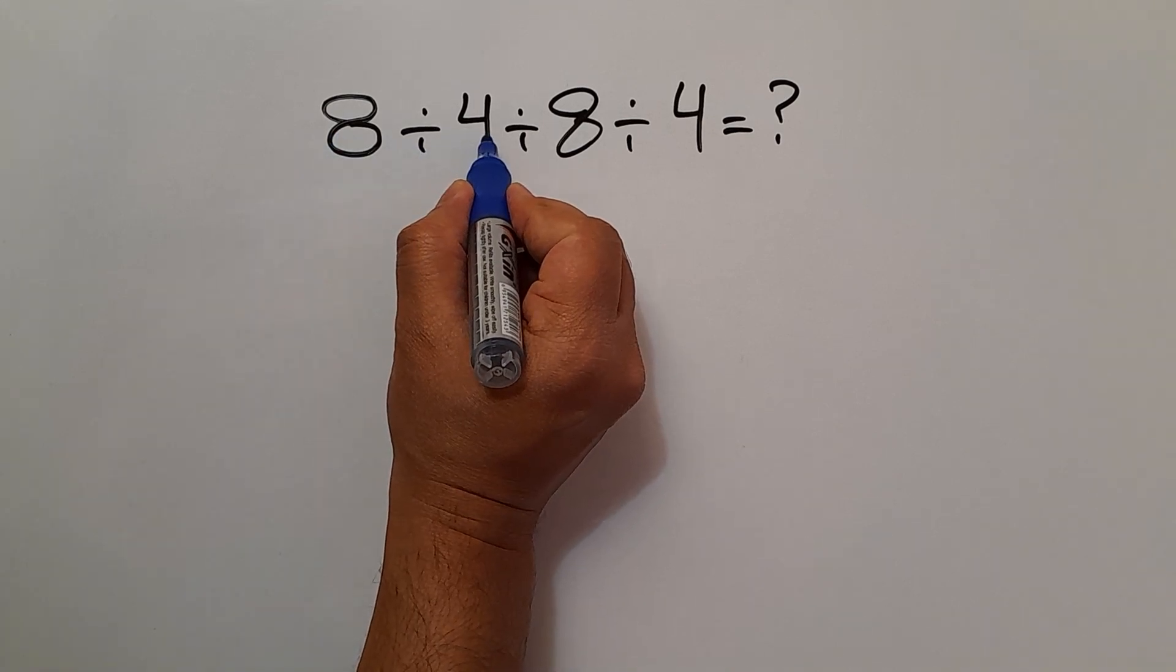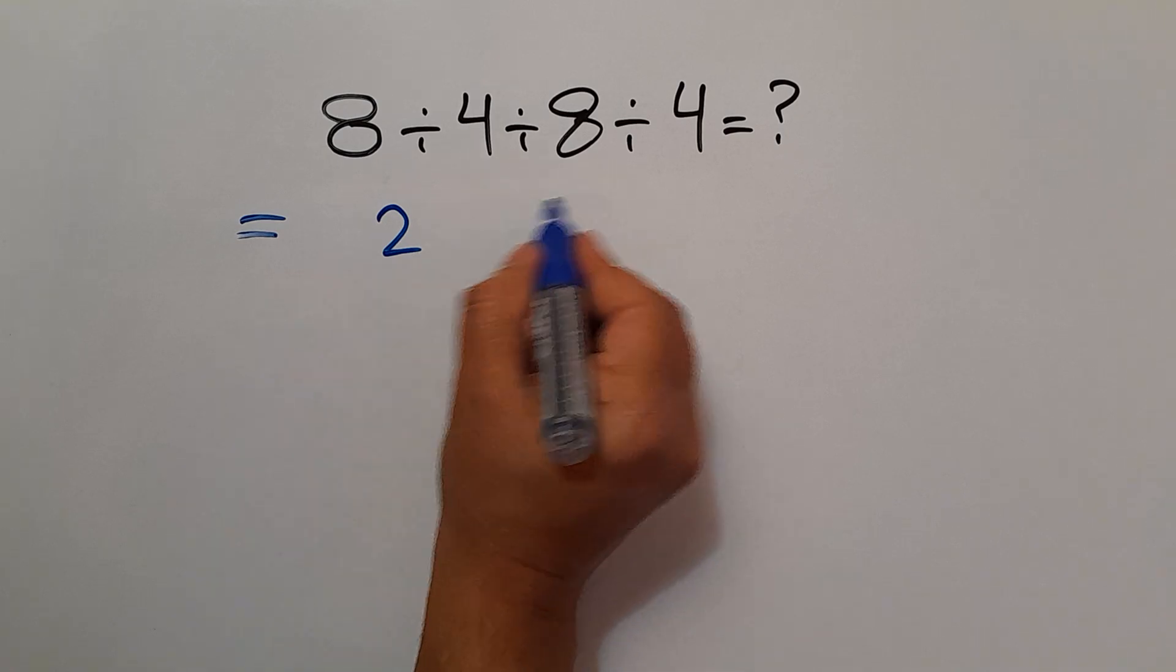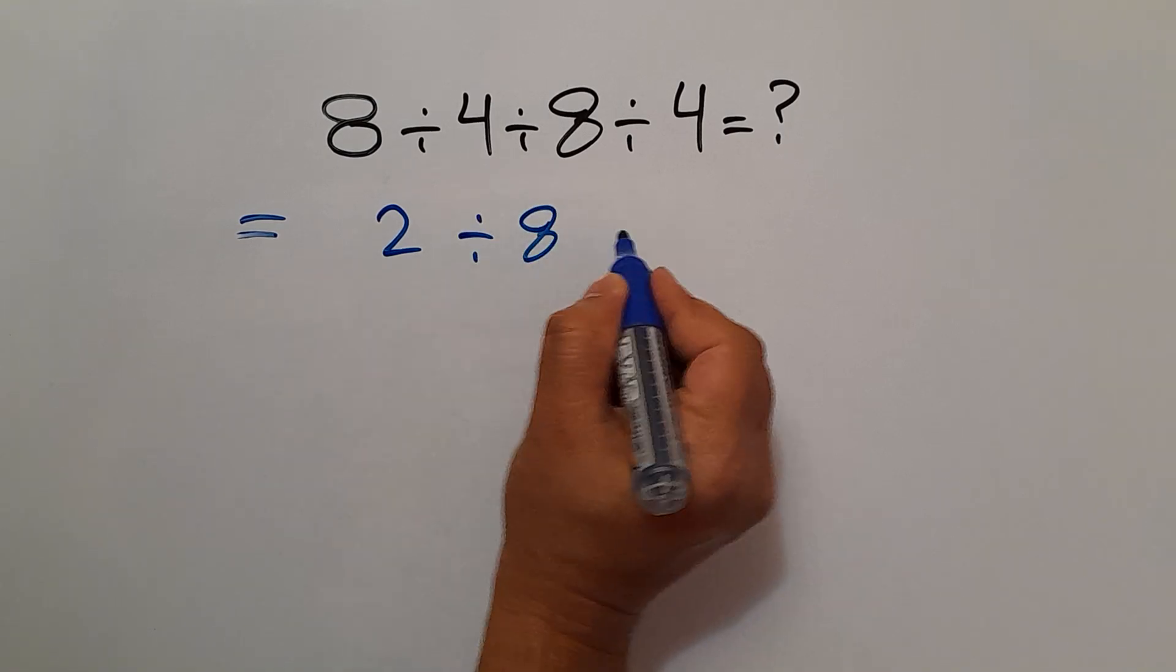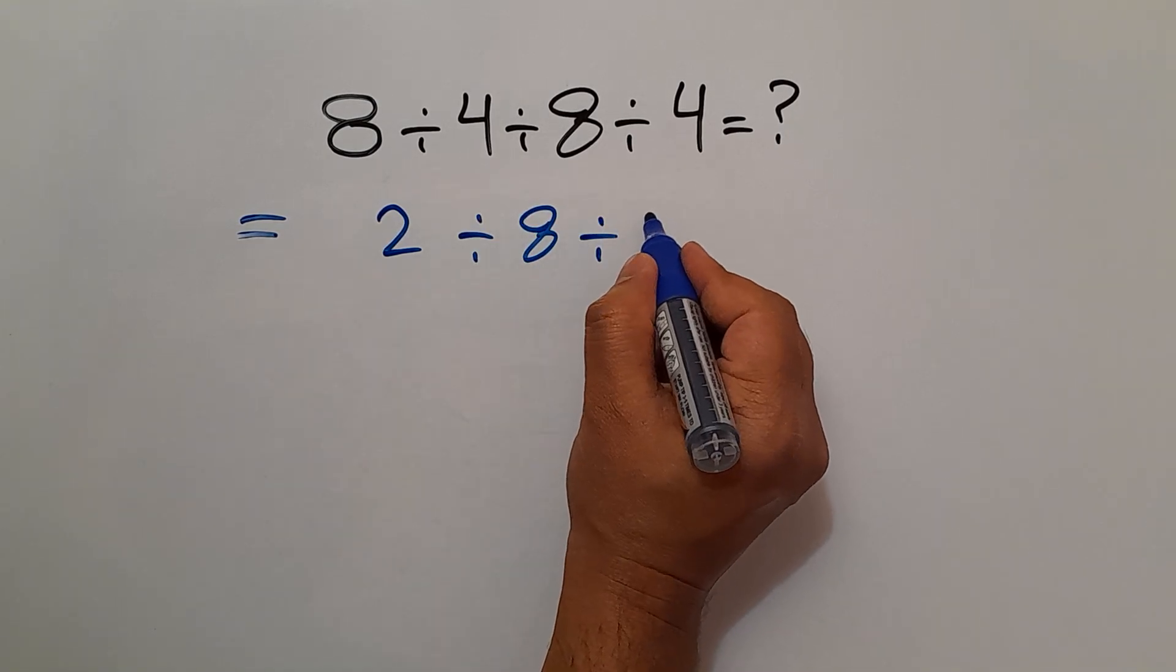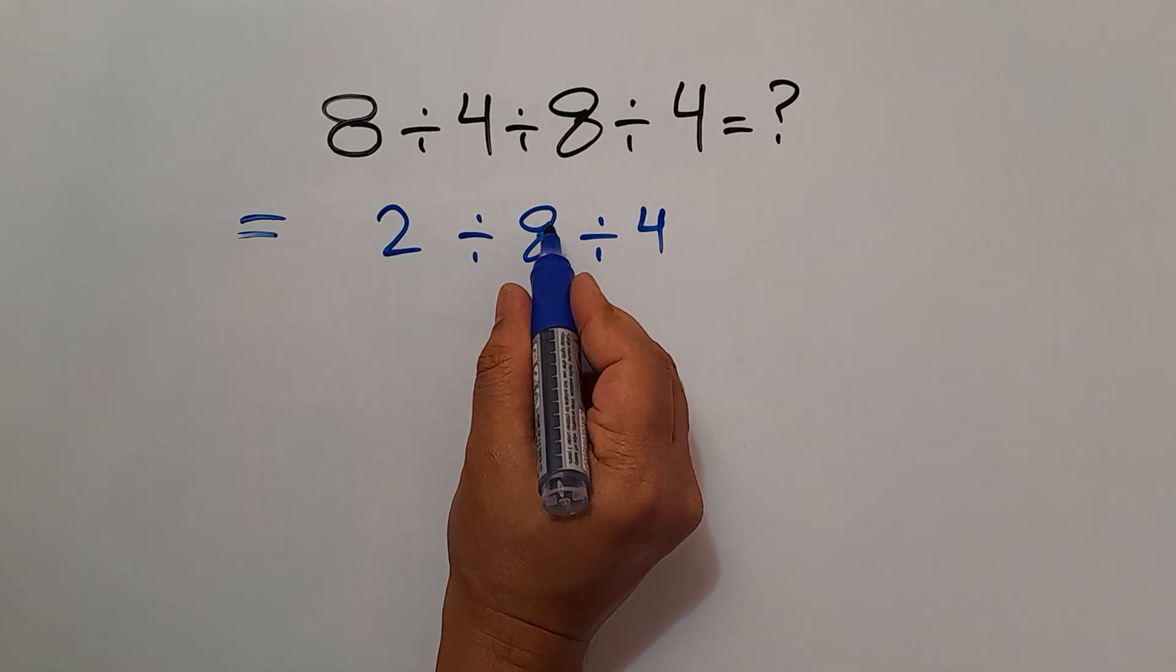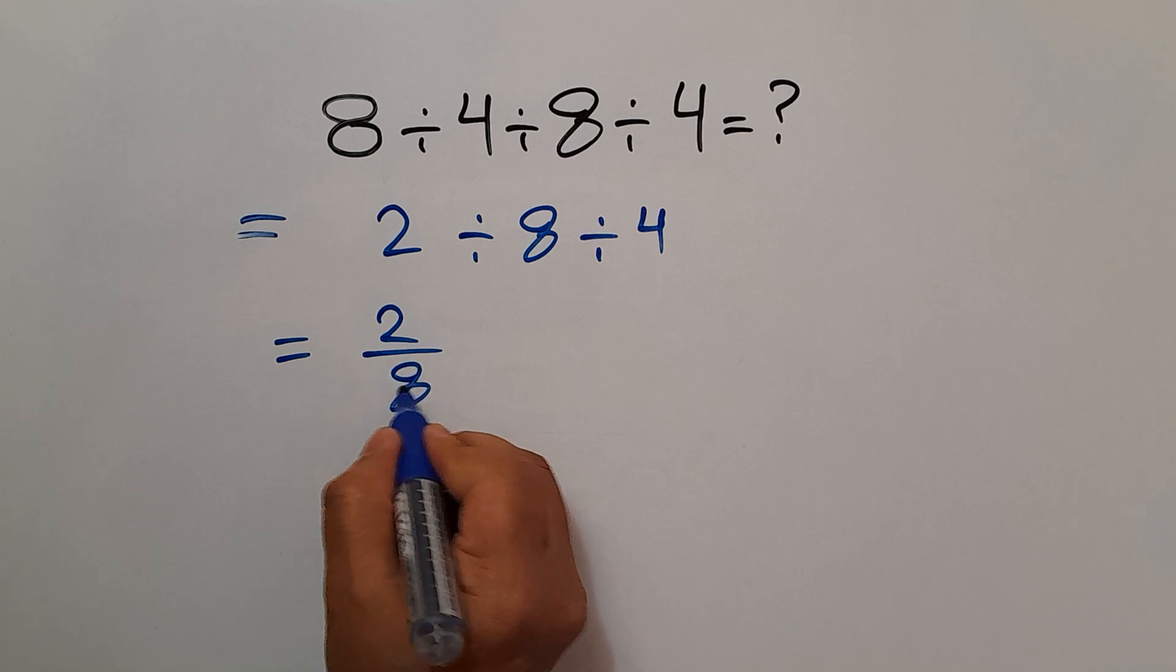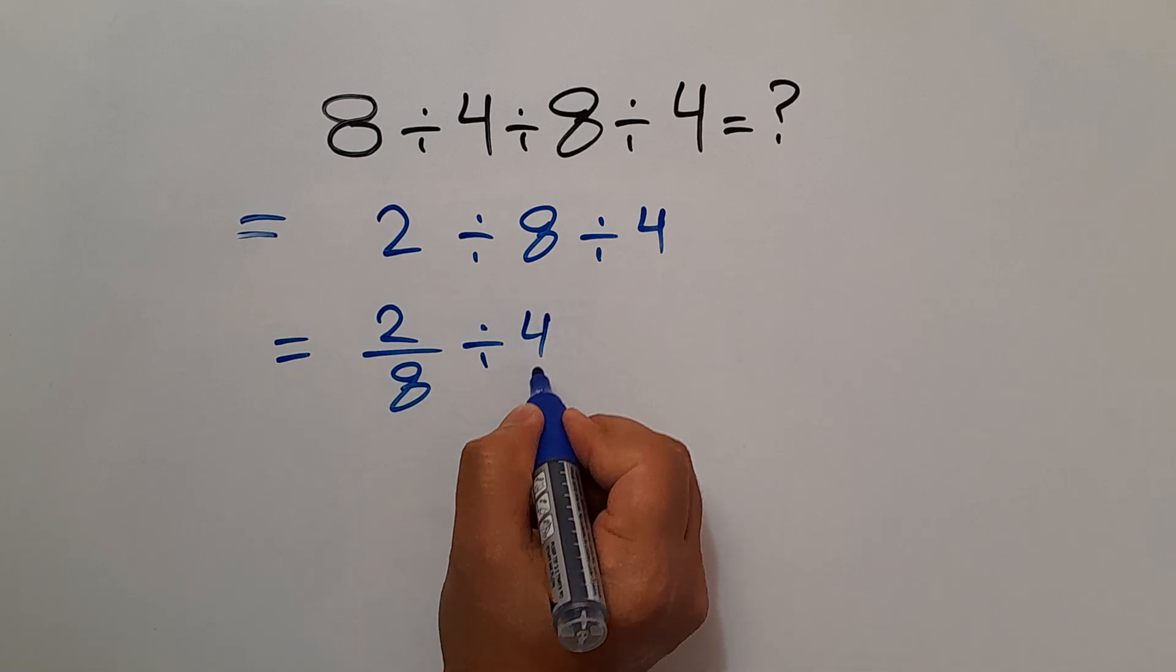8 divided by 4 equals 2, so 2 divided by 8 and again divided by 4. Actually, 2 divided by 8 can be written as 2 over 8, and divided by 4.